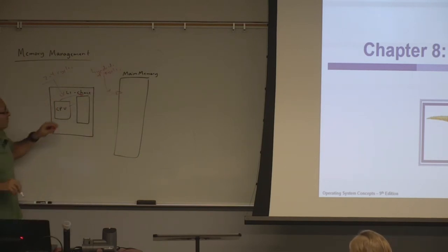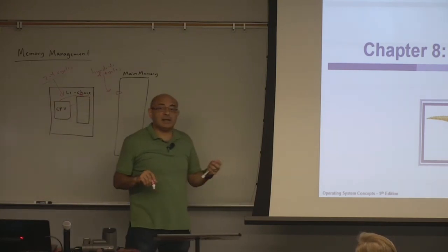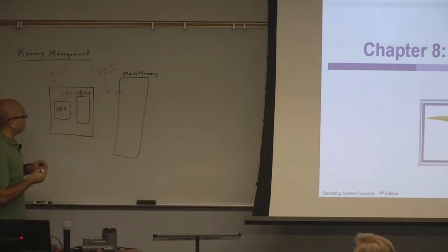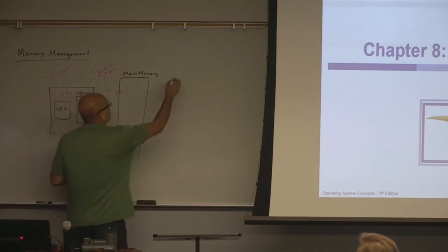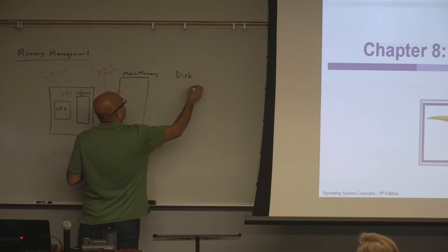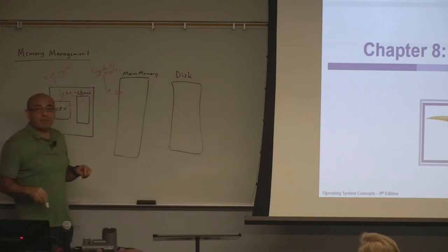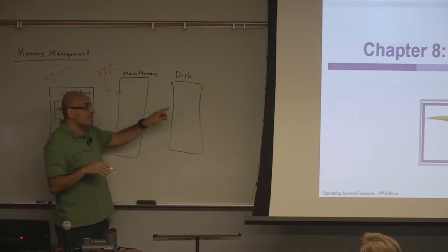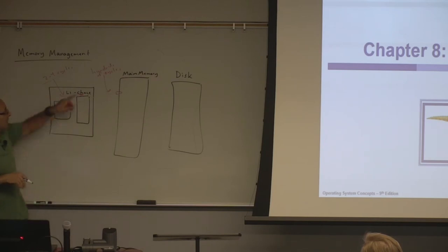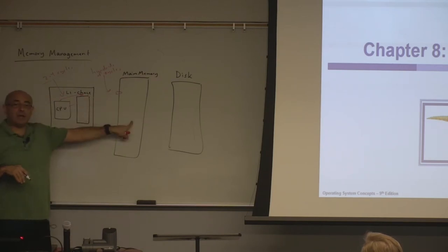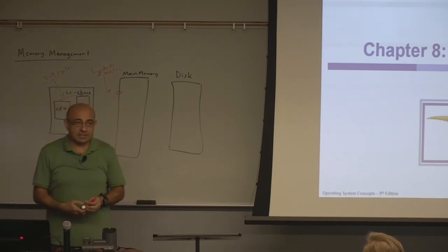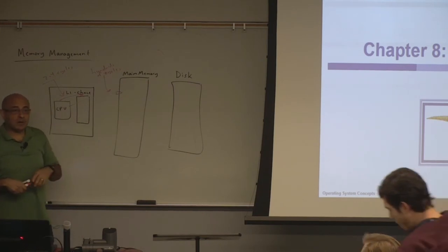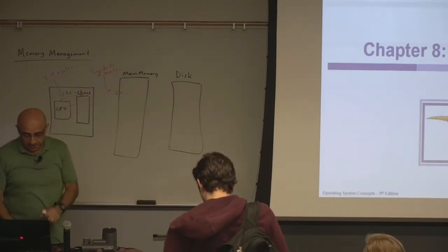Main memory is two orders of magnitude slower than the L1 cache. Later in this course we will be talking about the disk, which is even slower than main memory — orders of magnitude slower. So if we're talking hundreds of cycles for main memory access, we'll be talking thousands of cycles for accessing the disk. The disk is the slowest component of the system.